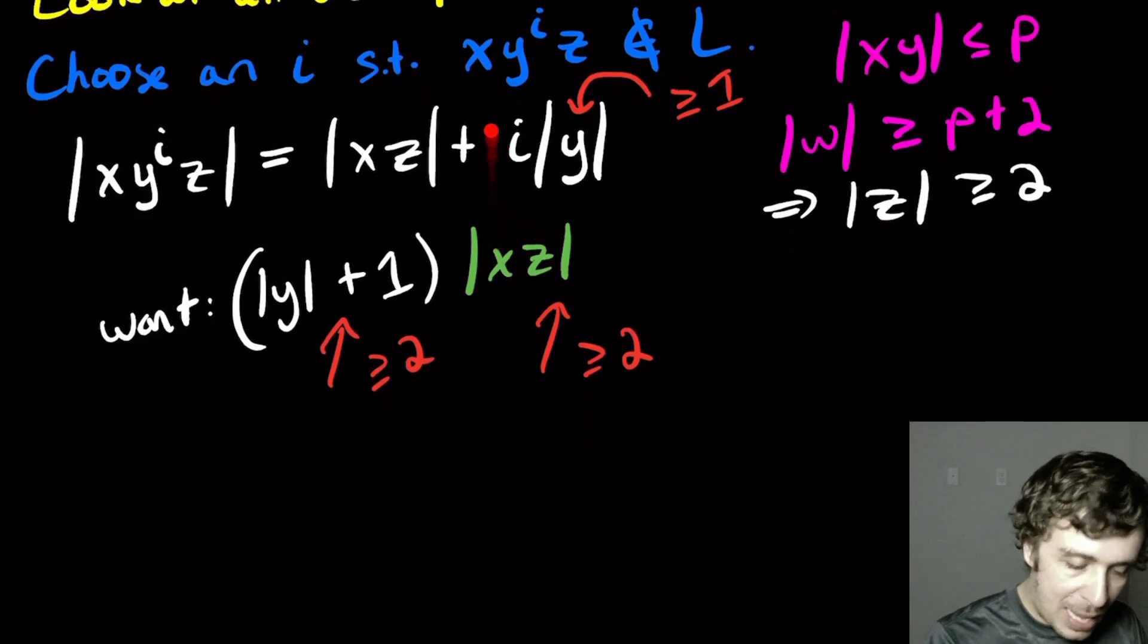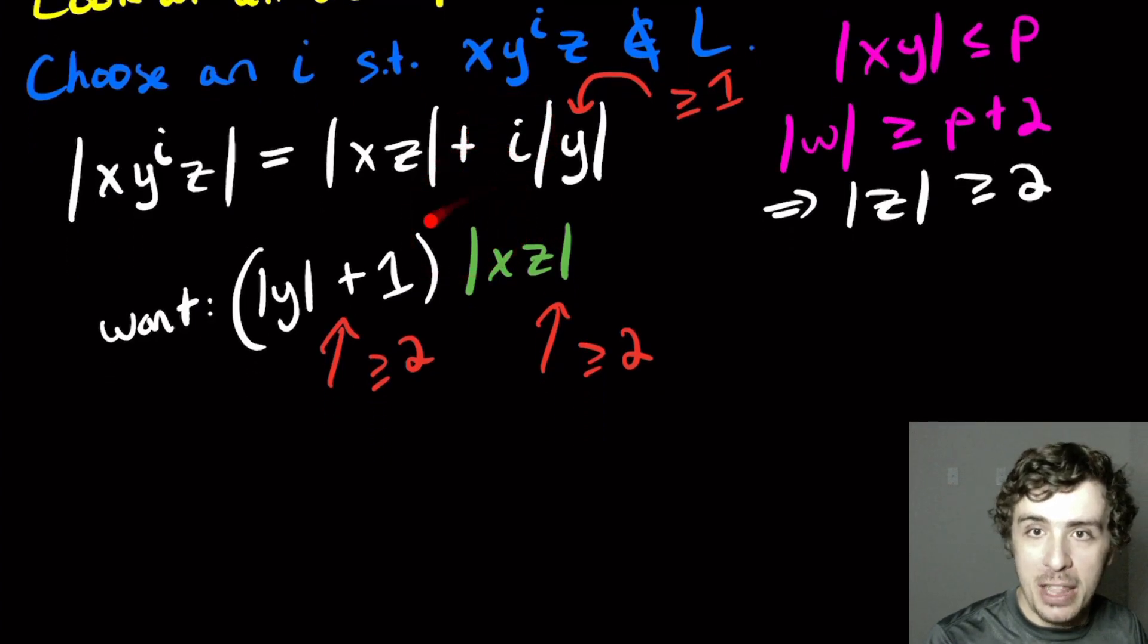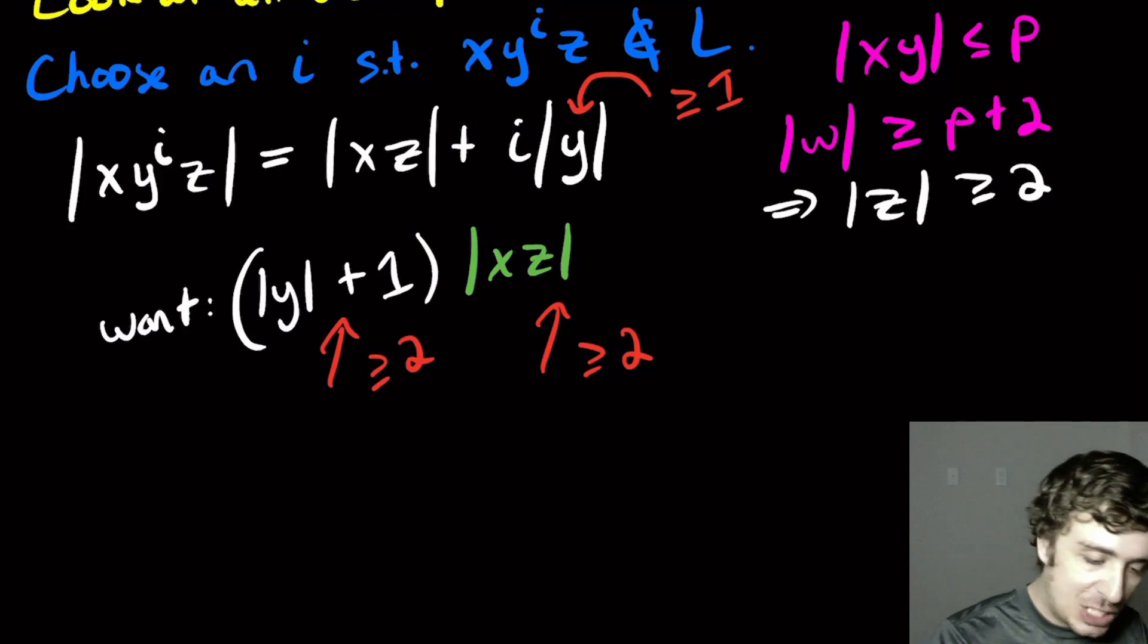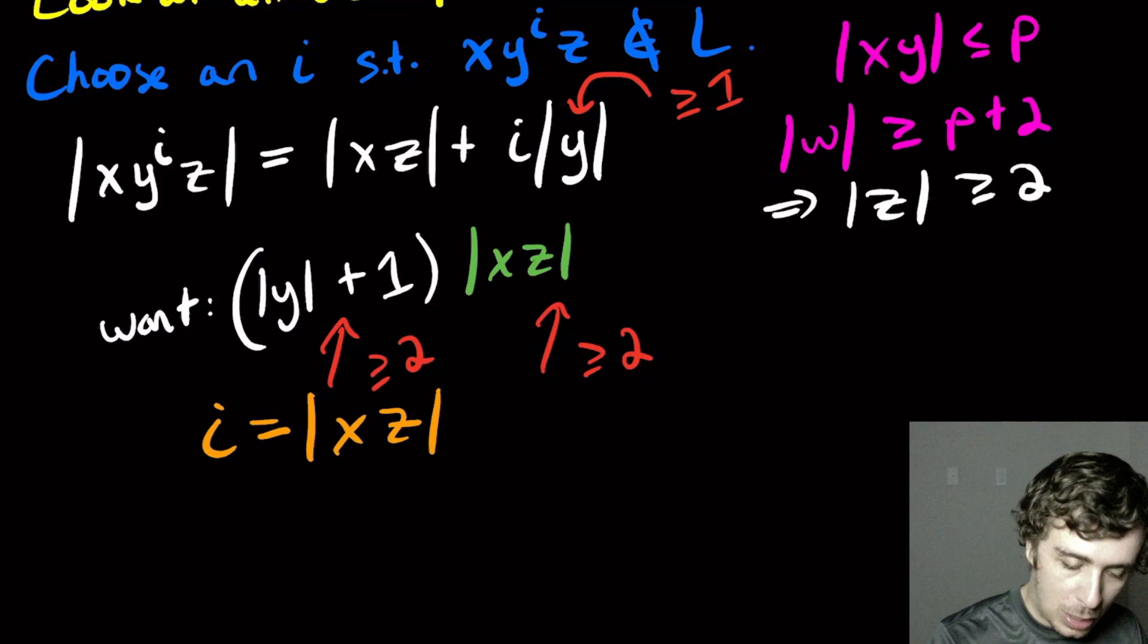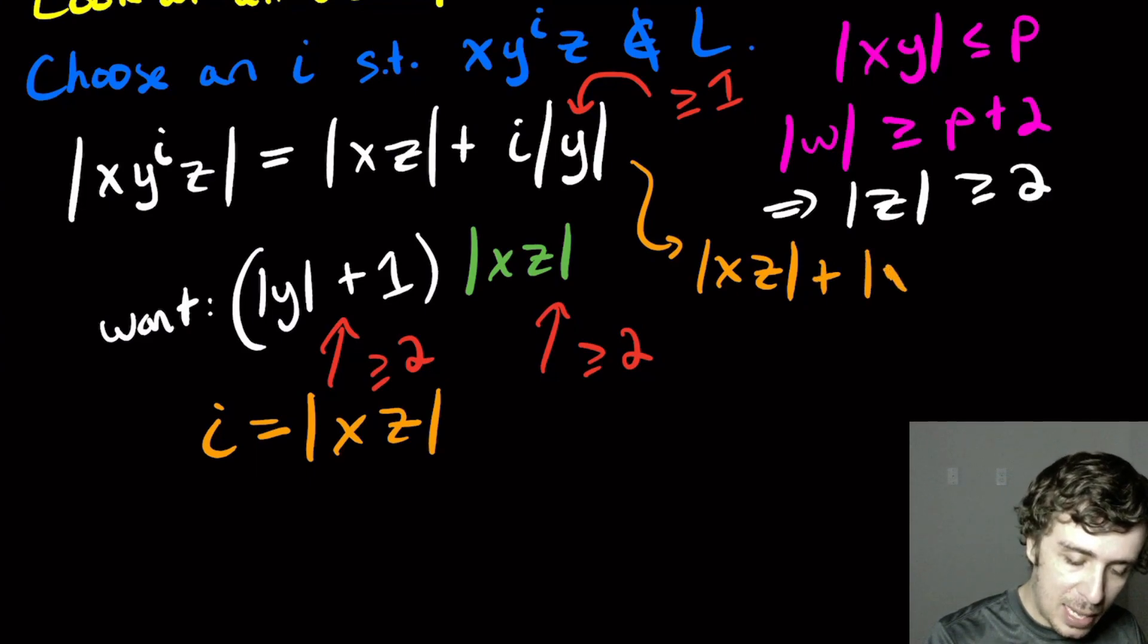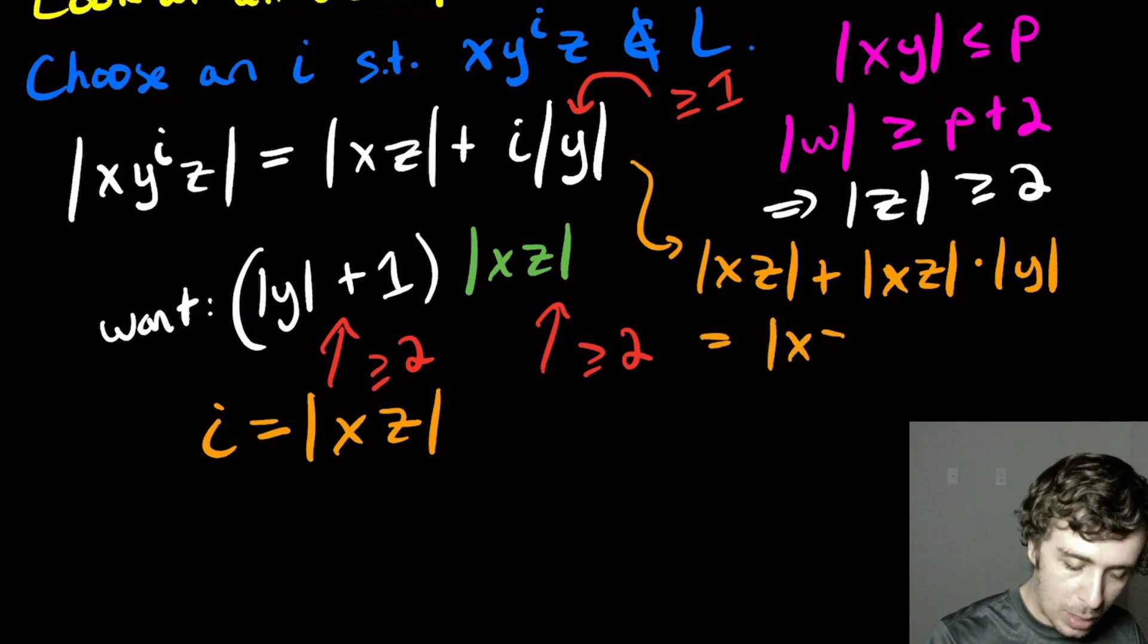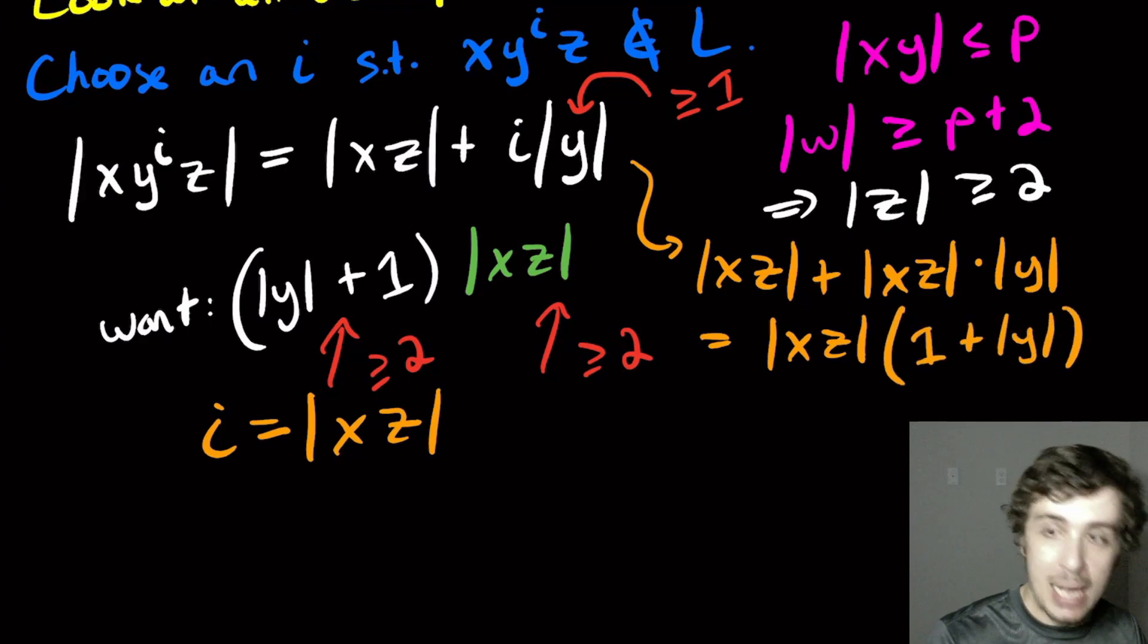But how can we get from this line to this line? It's by substituting that value of i. So the value of i that we're going to pick is the length of xz. If we actually compute this, this is |xz| plus |xz| times |y|. Since we got an xz in both cases, we factor it out and we get exactly the same expression.